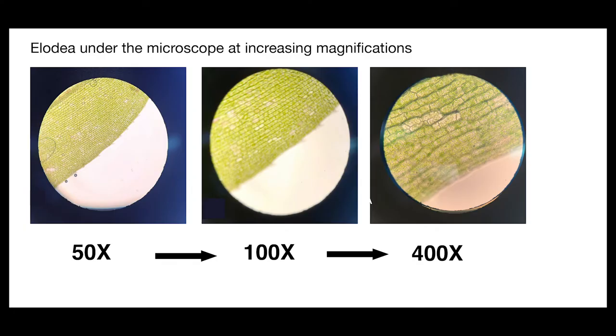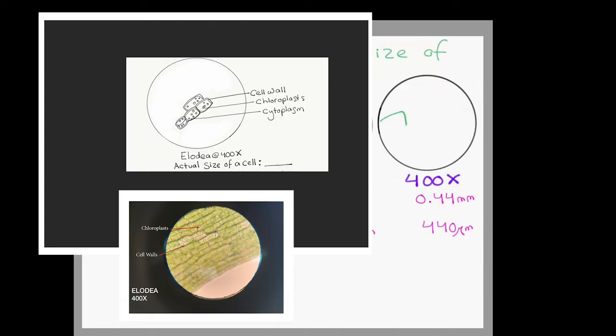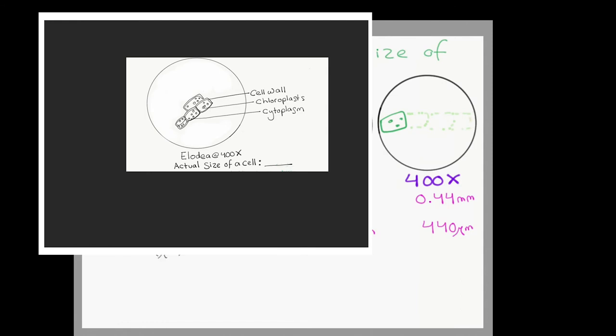Next, we'll use this information on field of view sizes to calculate the actual size of one of our Elodea cells. When doing these calculations, use the highest power possible, as it will provide the most accurate estimate. Looking back at our drawing of Elodea, or an actual view of the Elodea under the microscope at 400 times, we can see that about four of the cells would fit across the field of view if we line them up across the center. And that's just using one of the larger cells at the top there. You might choose a different cell, in which case you might get a slightly different estimate.